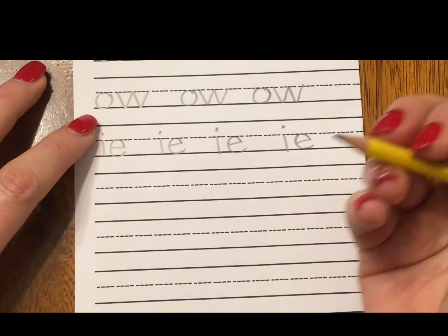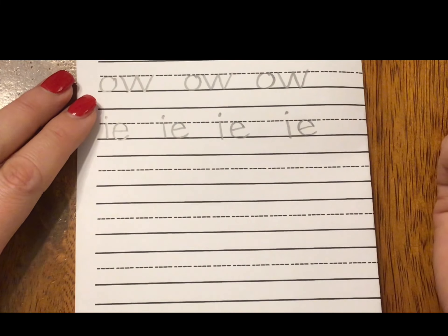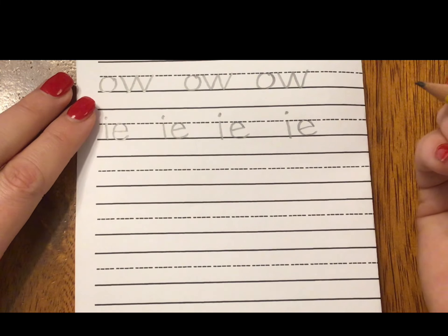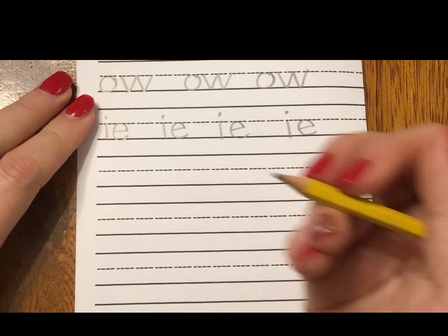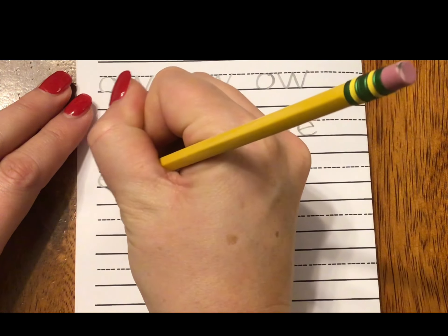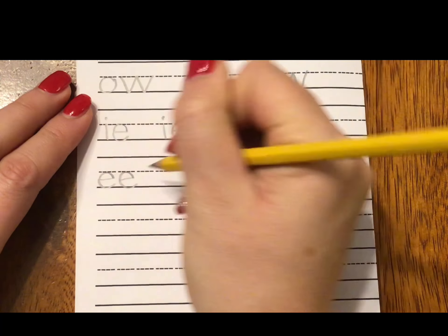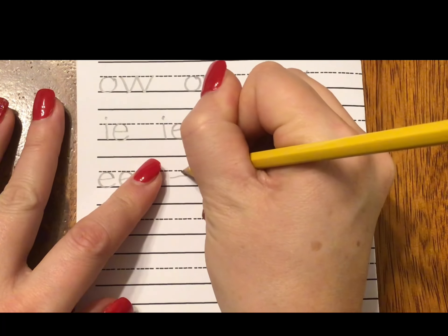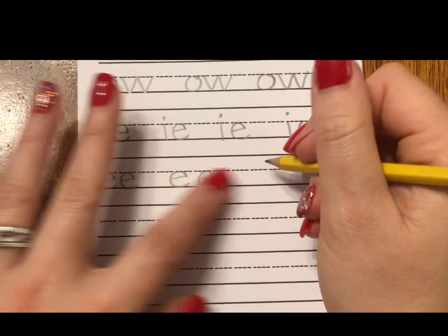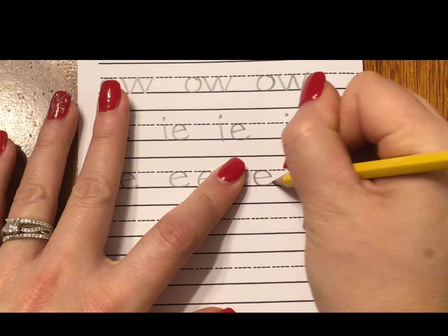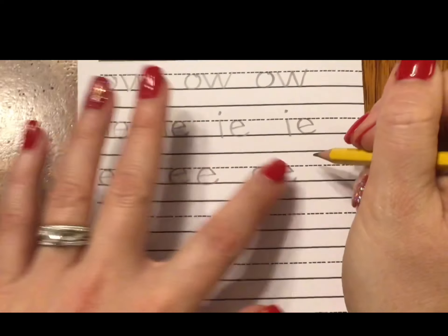Our next sound is E-I. Say it with me. E-I. Go ahead and write it. E-I. So we have E-I. E-I says E-I. So we go straight across, up and around the clock. Straight across, up and around the clock. So E-E says E-I.